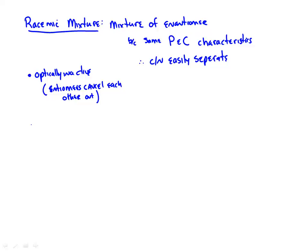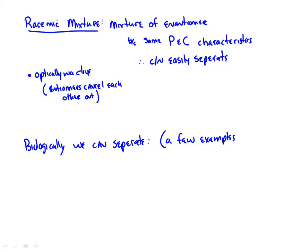Biologically, organisms can separate enantiomers. For instance, plus lactic acid (L-lactic acid) is found in human muscles and is a very important biological molecule discussed in the bioenergetics chapter.